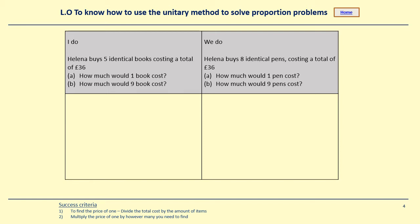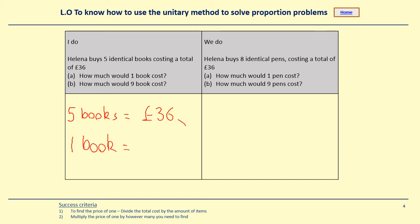For this one it says Helena buys five identical books costing a total of £36. So five books cost £36. How much would one book cost? This is the unitary method — we find the price of one. We need to do the cost, which is 36, divided by the quantity, which is five. A fifth of the amount of books will cost a fifth of the price, so one book is 36 ÷ 5, which gives me £7.20. So each book costs £7.20.